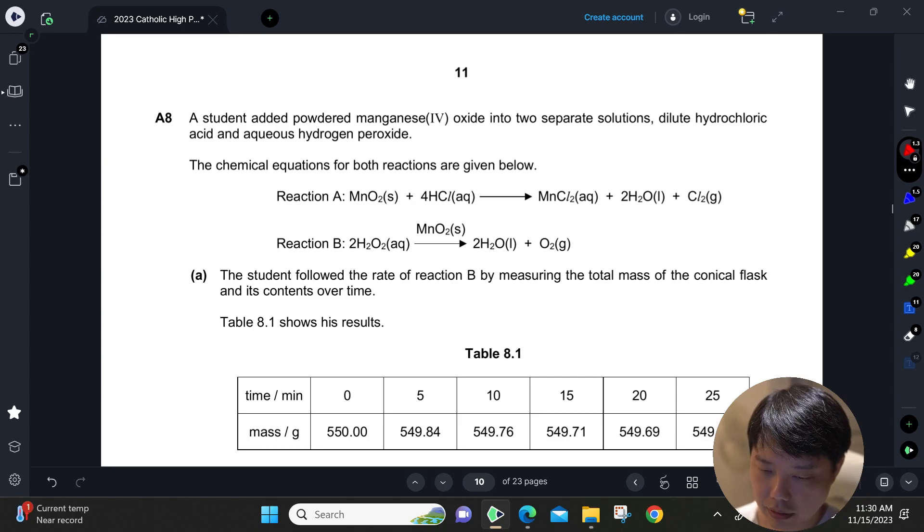A catalyst, right? Manganese oxide is acting as a catalyst to decompose hydrogen peroxide to water and O2.